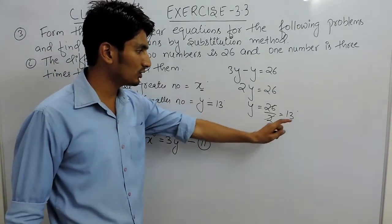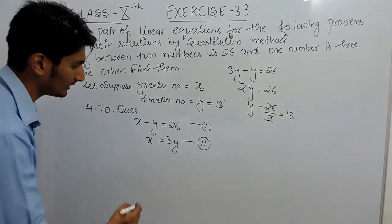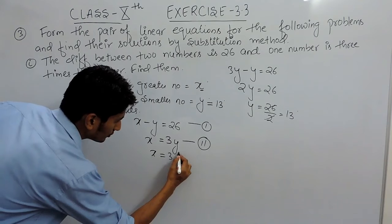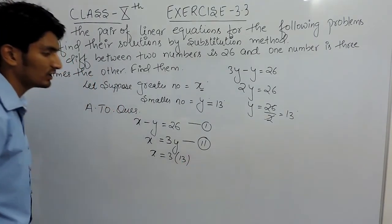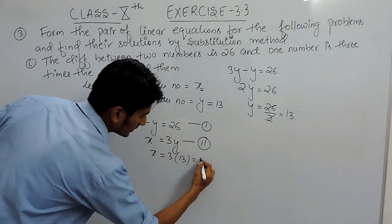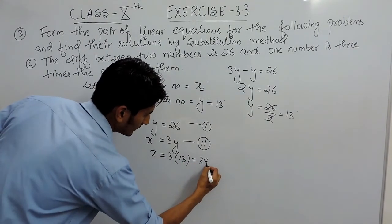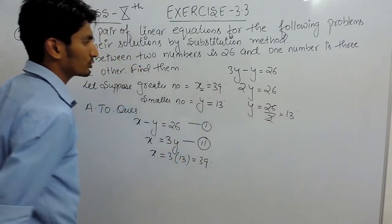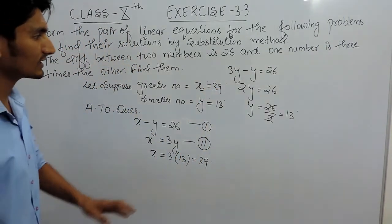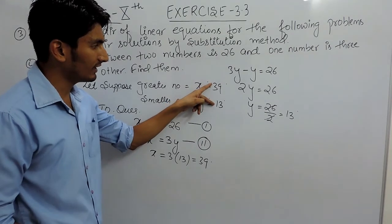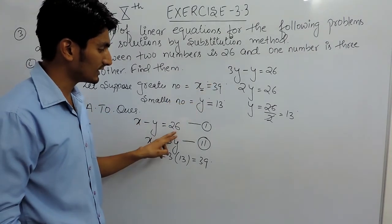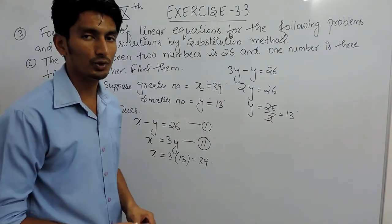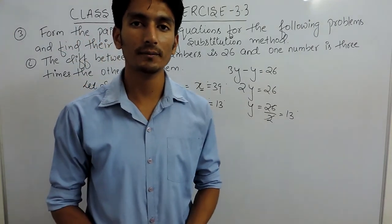Now substitute y equals 13 into equation 2. So x equals 3 times 13, which is 39. The greater number is 39. These values satisfy both conditions: their difference is 26, and one value is 3 times the other. This is how we solve this part.